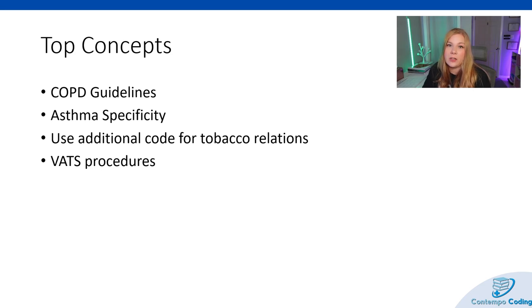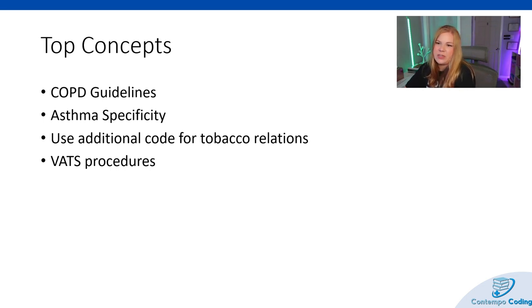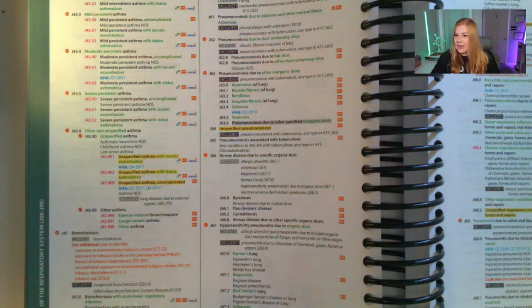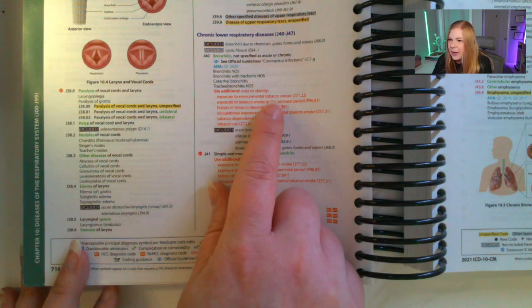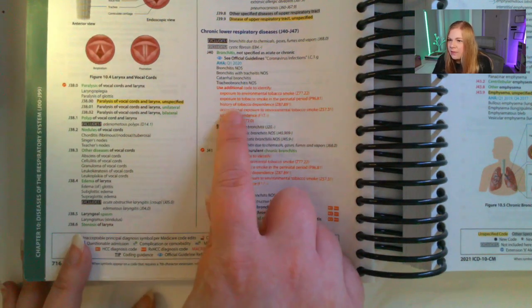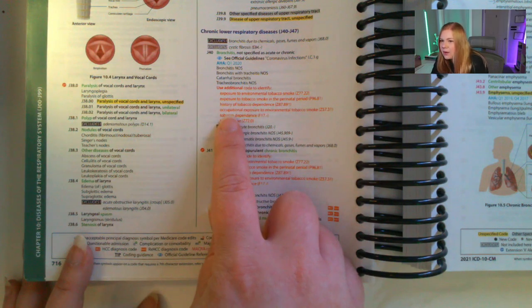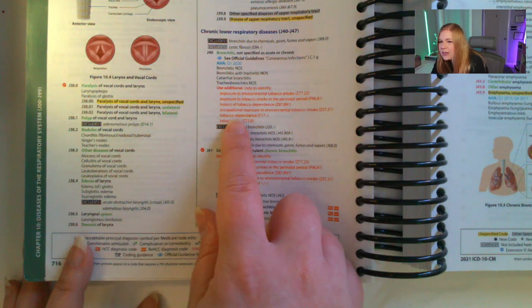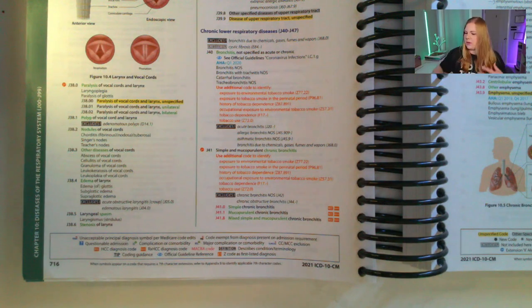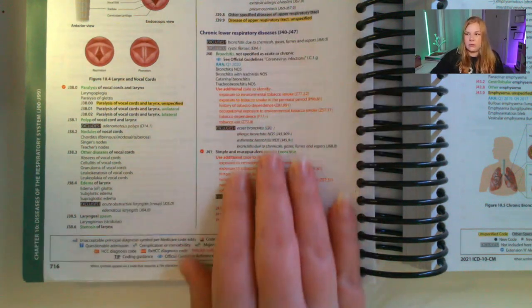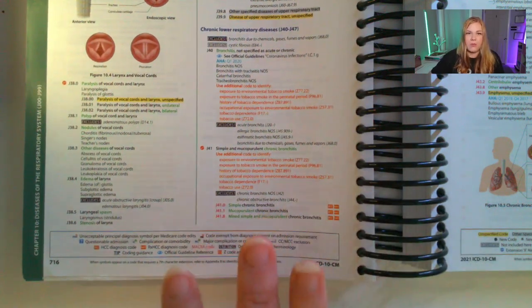Another key thing that comes up in diagnosis coding for these procedures is tobacco use, abuse, history, and exposure. Just about any respiratory condition in the ICD-10-CM manual is going to have notes saying to use additional codes to identify exposure to tobacco products or smoke — whether they have a history of using tobacco, are occupationally exposed, are dependent on tobacco, or are currently using tobacco — because that does impact a lot of things with respiratory conditions.